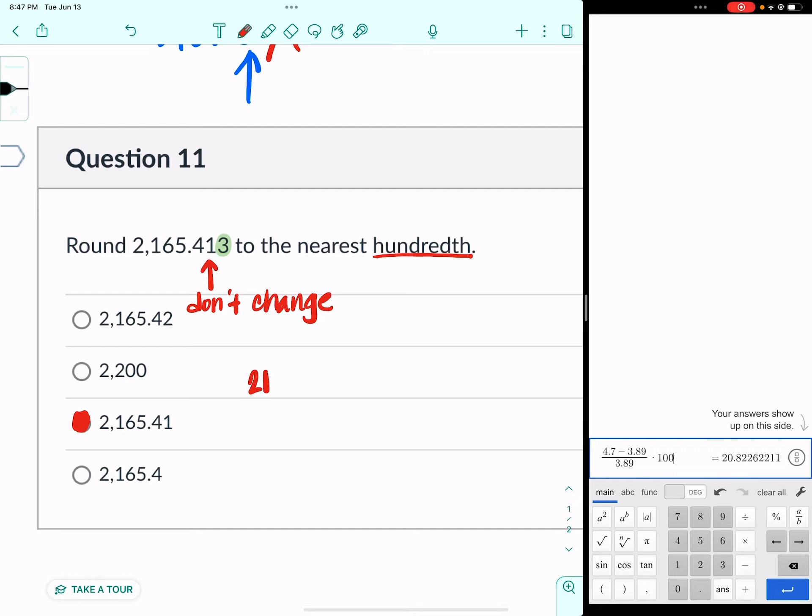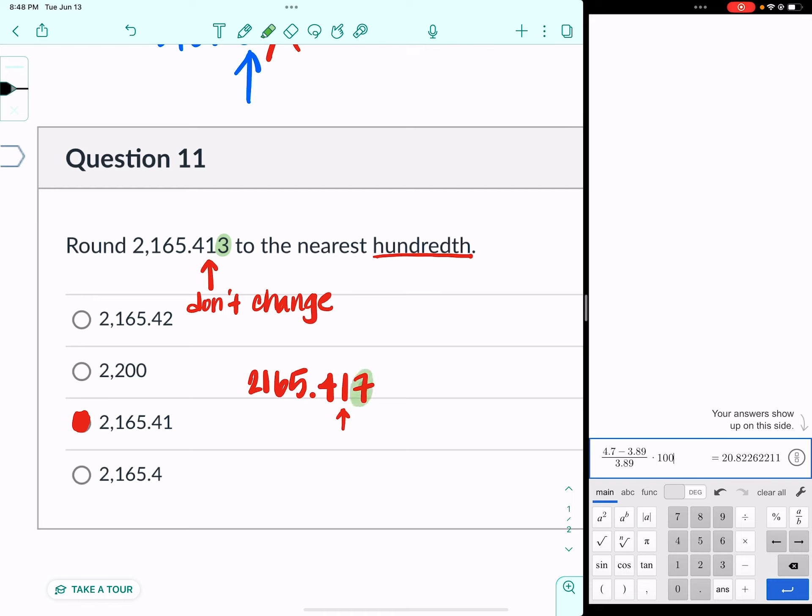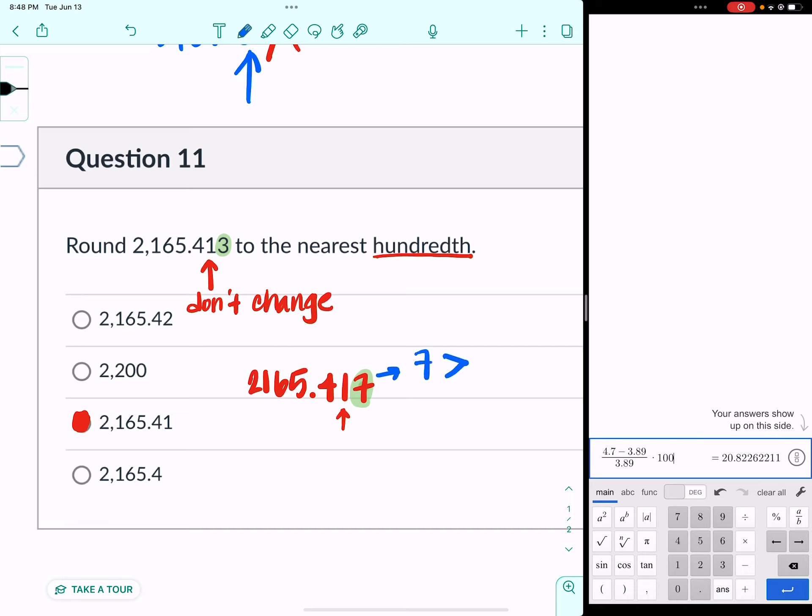Let's say that this was $2,165.417 instead of 413. Same story. We still want to round the one. So we go next door and take a look at the seven. Now this time, because I changed it on you, seven is greater than five. It's actually greater than or equal to, so it'd be consistent. We'll leave it like that. So that means we round the one up to two. So if the three was a seven, we would round it to $2,165.42.